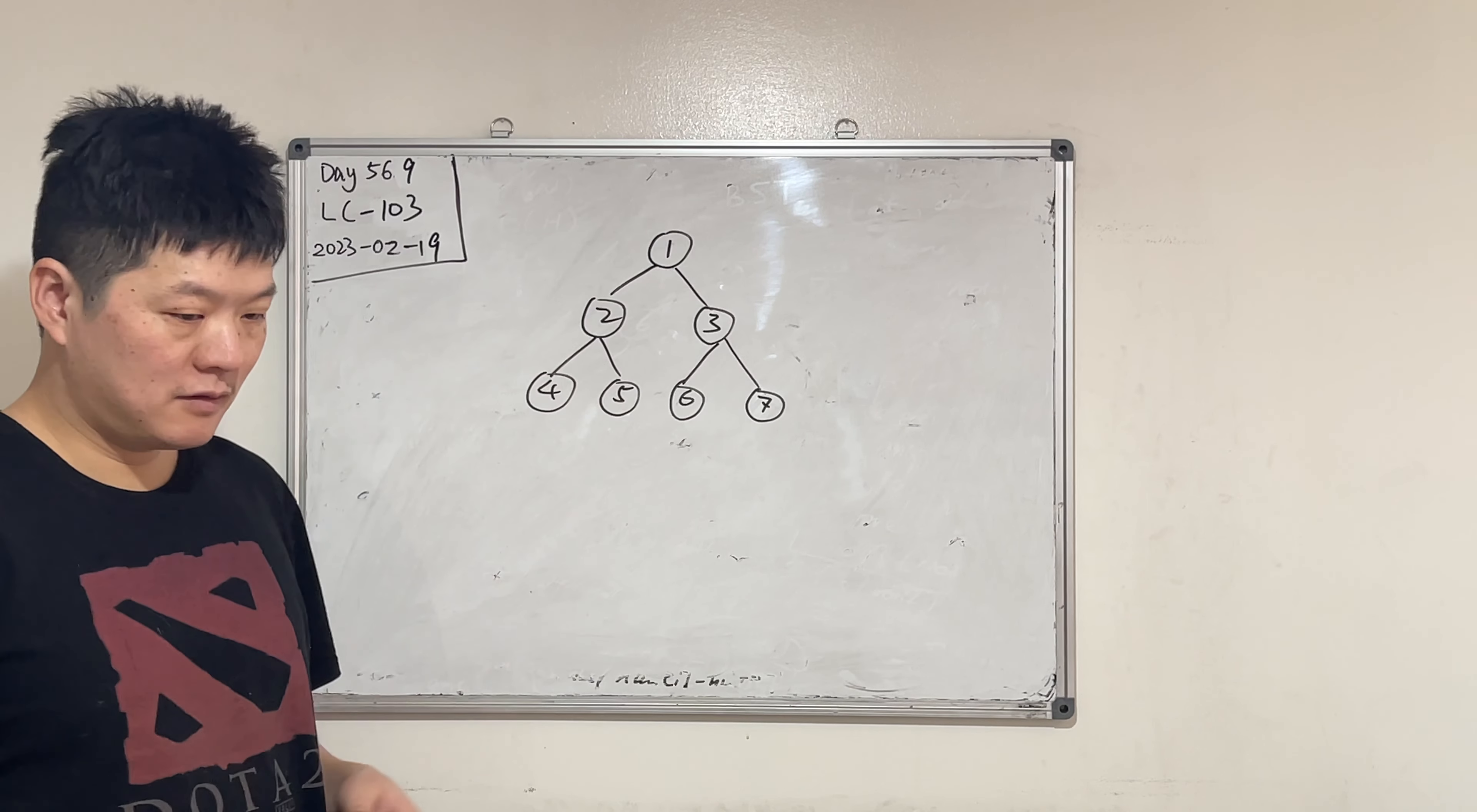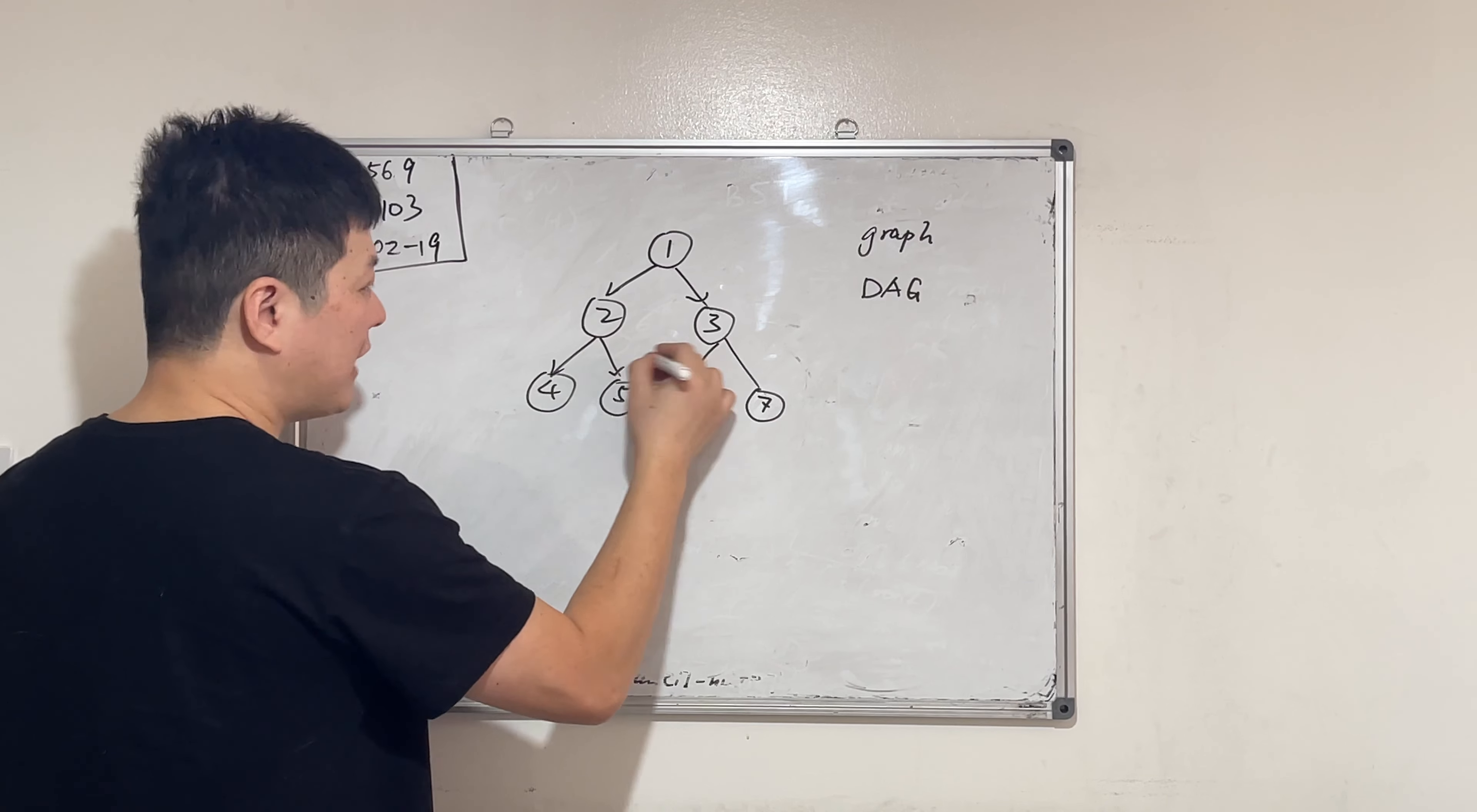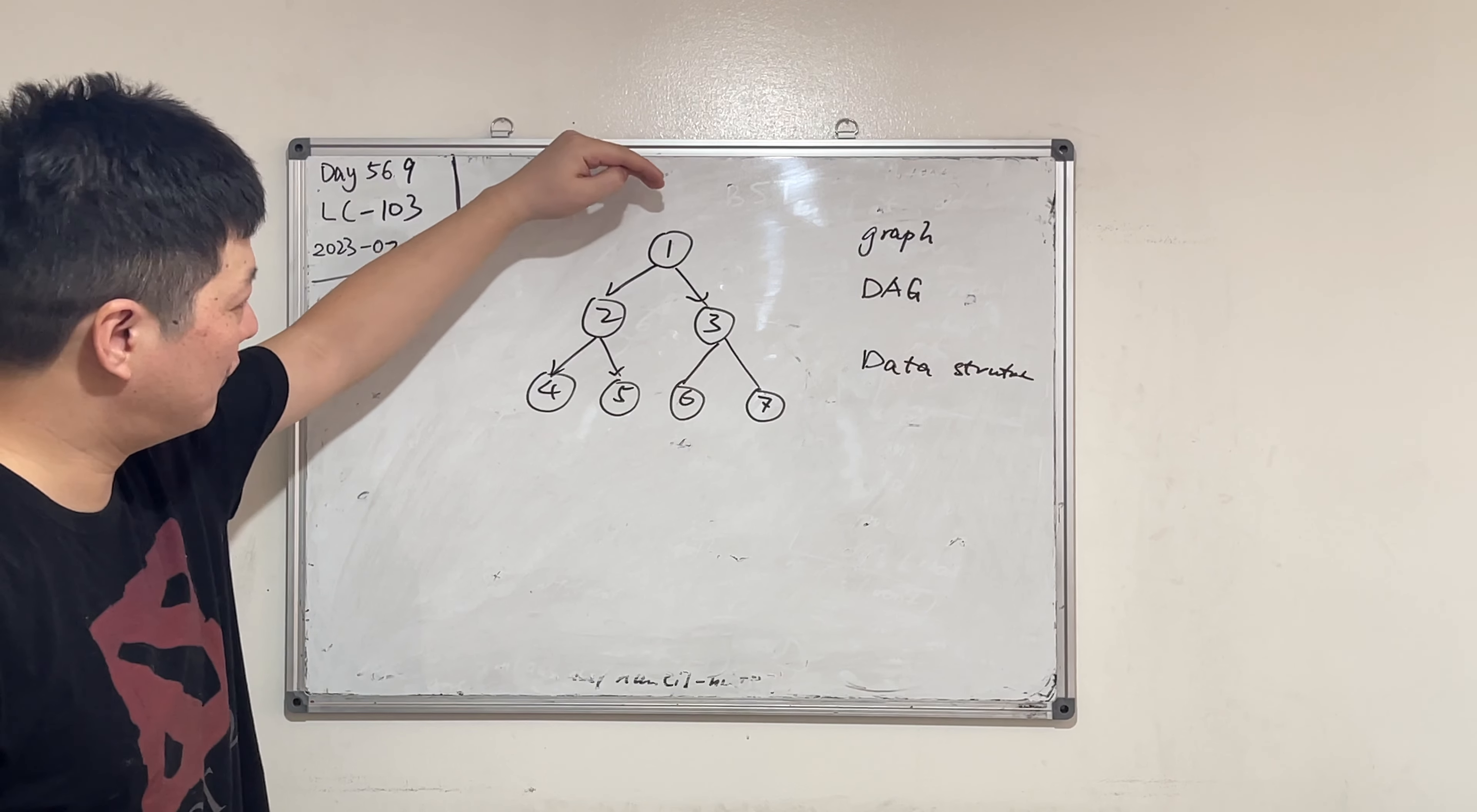Binary tree is like this. It's a graph with... this way. It's DAG, yeah. DAG - acyclic graph. Direct means from parents to computers. Okay, so it's the data structure. Data structure is how we ask computer how to store the data in an organized way. Data structure. So binary tree.